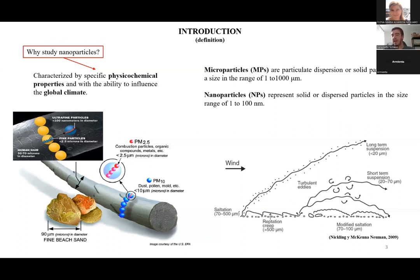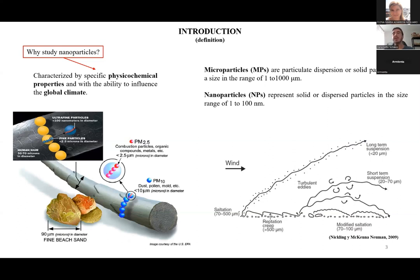Micro and nanoparticles have different sizes and generally the size is defined between ranges. Microparticles are particulate dispersions or solid particles with a size in a range of 1 to 1000 micrometers. Nanoparticles represent solid or dispersion particles in the size range of 1 to 100 nanometers. We can observe the difference in size between sand, coarse particles, and fine particles. Coarse particle is defined as PM10 and fine particle as PM2.5. Nanoparticles or ultrafine particles are smaller than 100 nanometers.